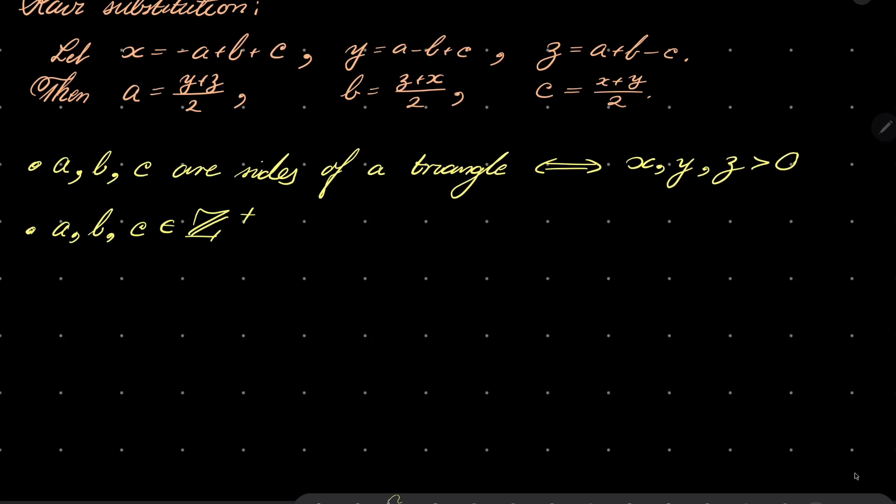Moreover, notice that a, b, and c are positive integers. Well, of course, if they are positive integers, then x, y, and z are also positive integers. But the other way, if x, y, and z are positive integers, well, then either our numbers a, b, and c are integers or integers plus one half. So we wish to exclude the second possibility. And to exclude the second possibility, we need to assume that this is even, this is even, and this is even. And so x, y, and z must be of the same parity.